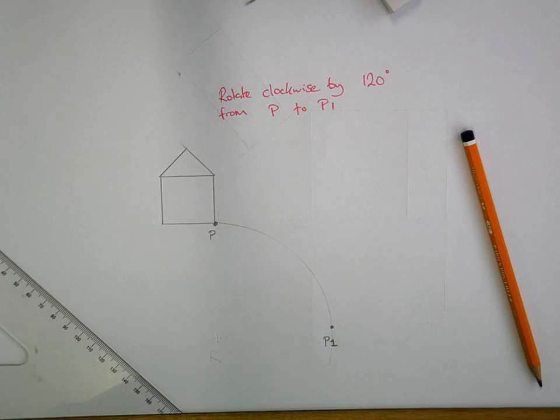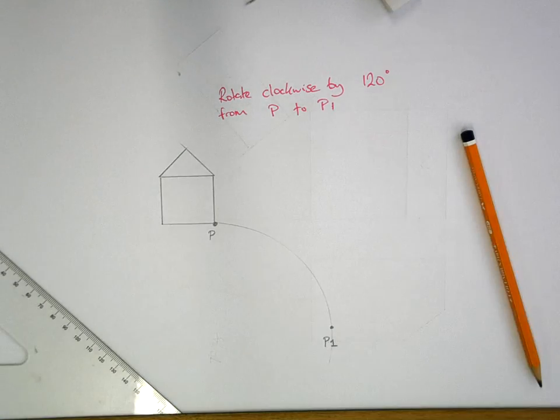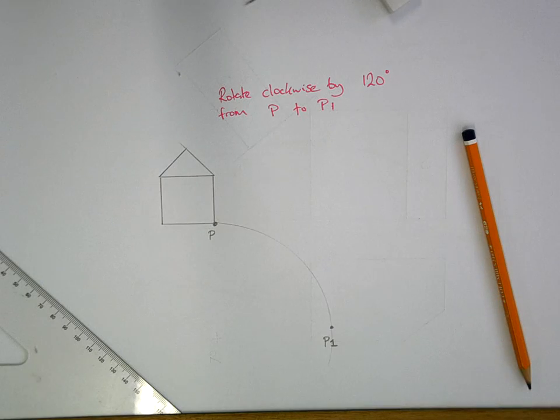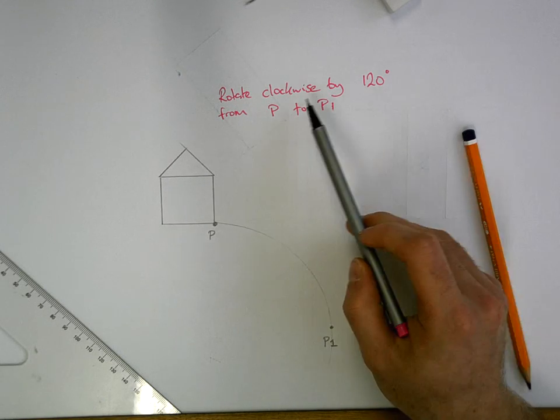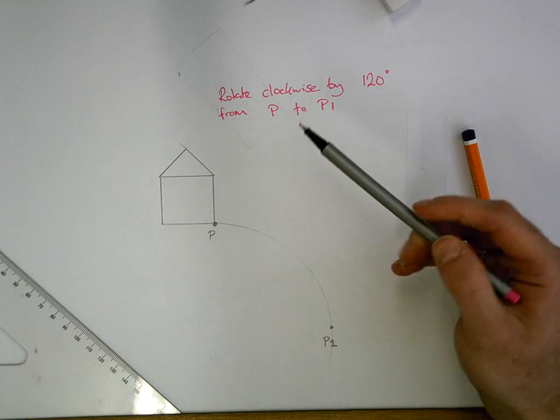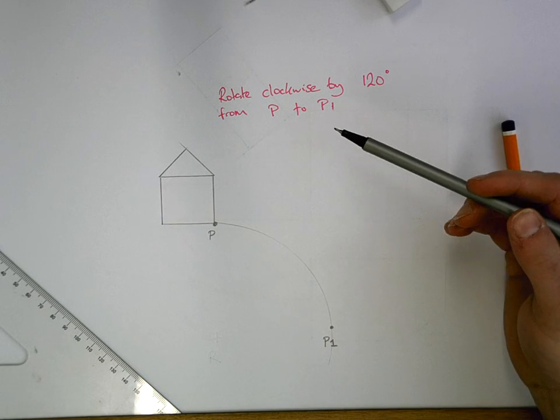This is the rotation part of the transformation geometry questions. The wave line alert is a typical kind of question. They're asking you to rotate clockwise by 120 degrees from P to P1. So you'd all agree that's kind of a typical thing you're asked, isn't it?